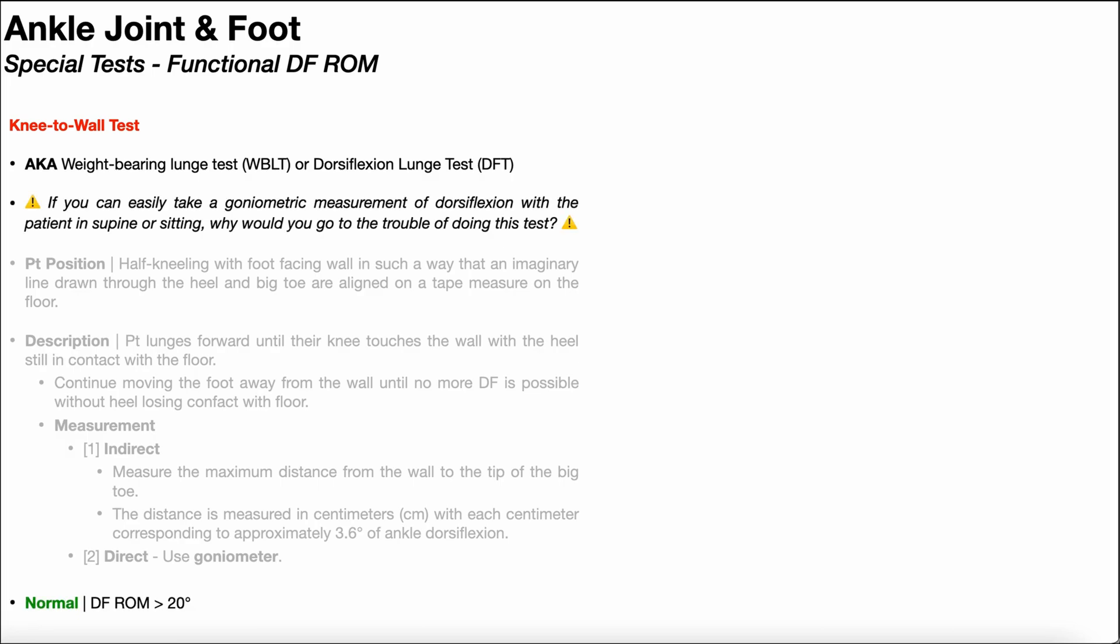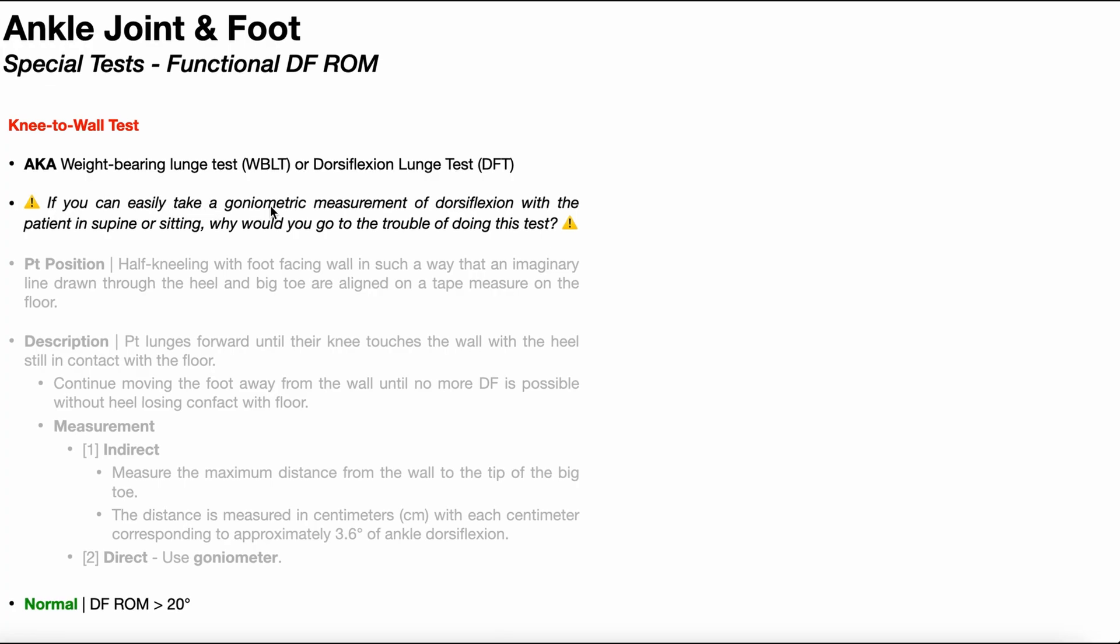Now recall that the normal dorsiflexion range of motion that's given in most textbooks is being at least 20 degrees. So here's an important question. If you can easily take a goniometric measurement of dorsiflexion range of motion with the patient in supine or sitting, why would you go to the trouble of doing this test?